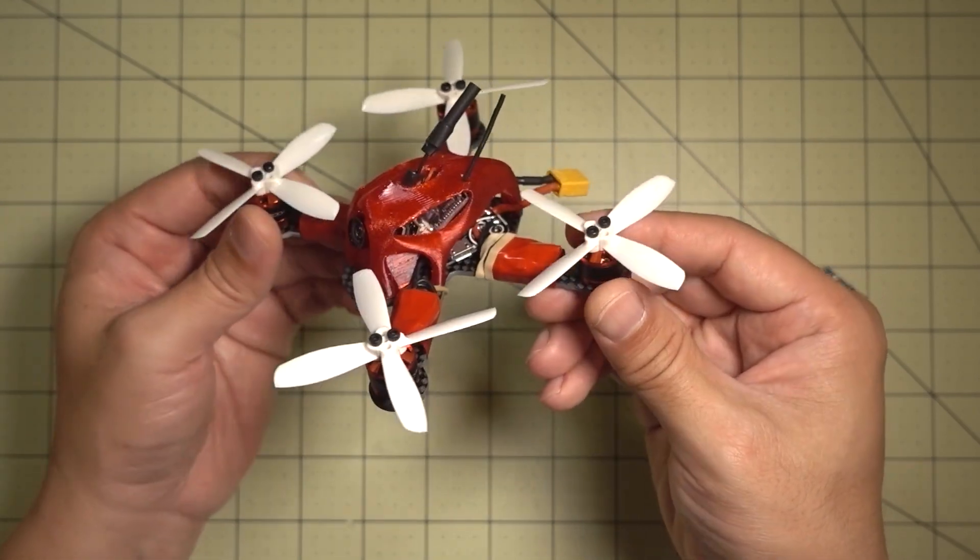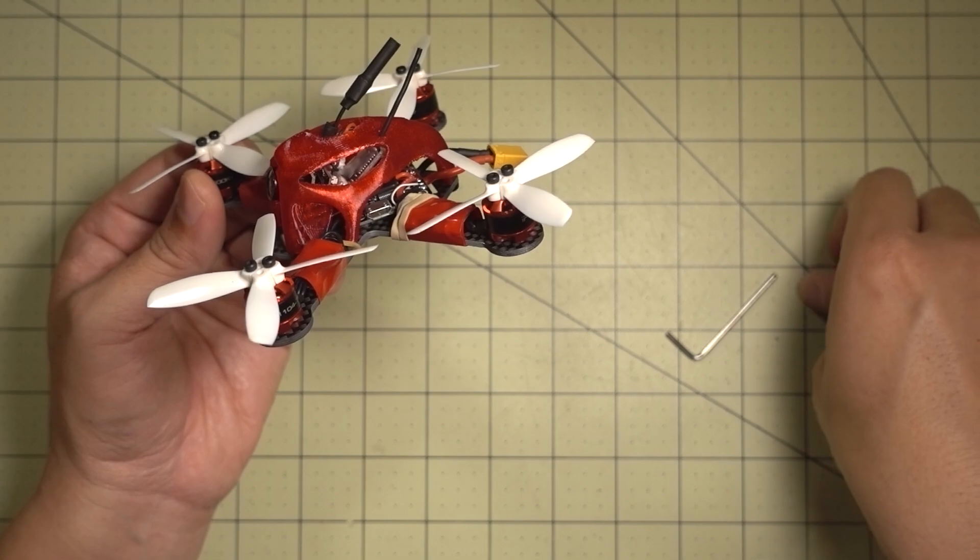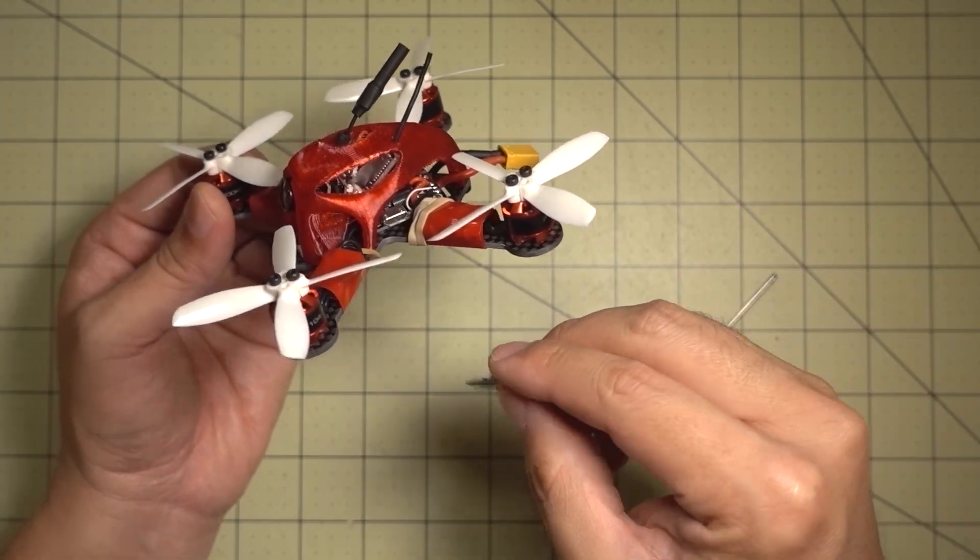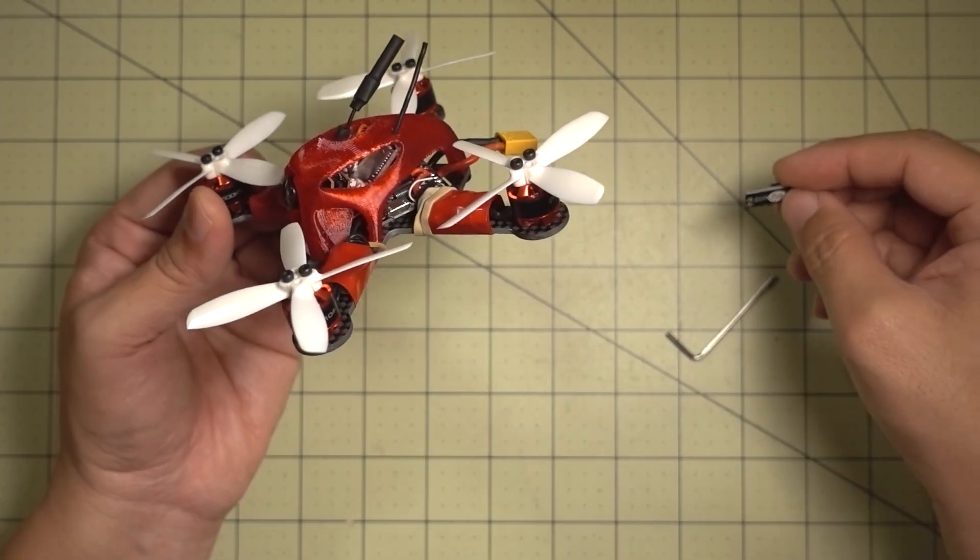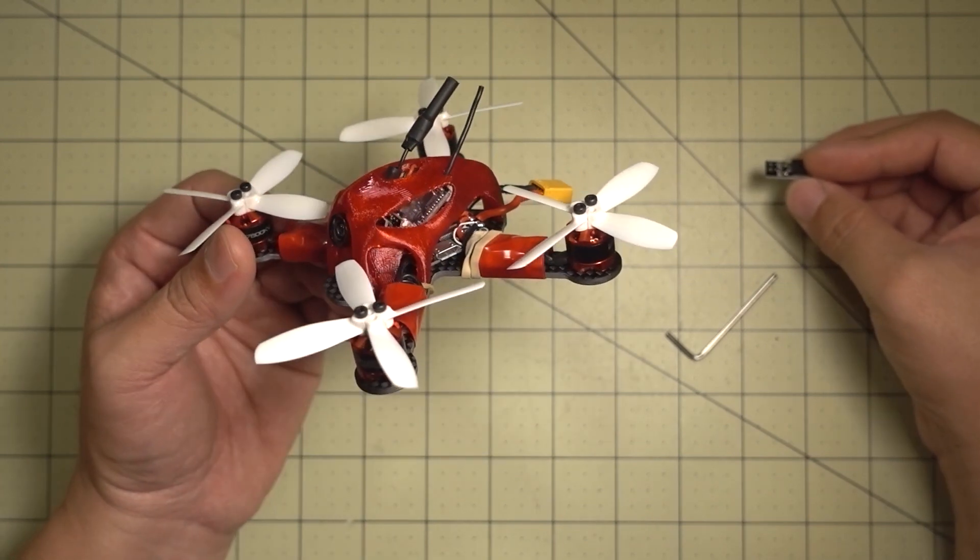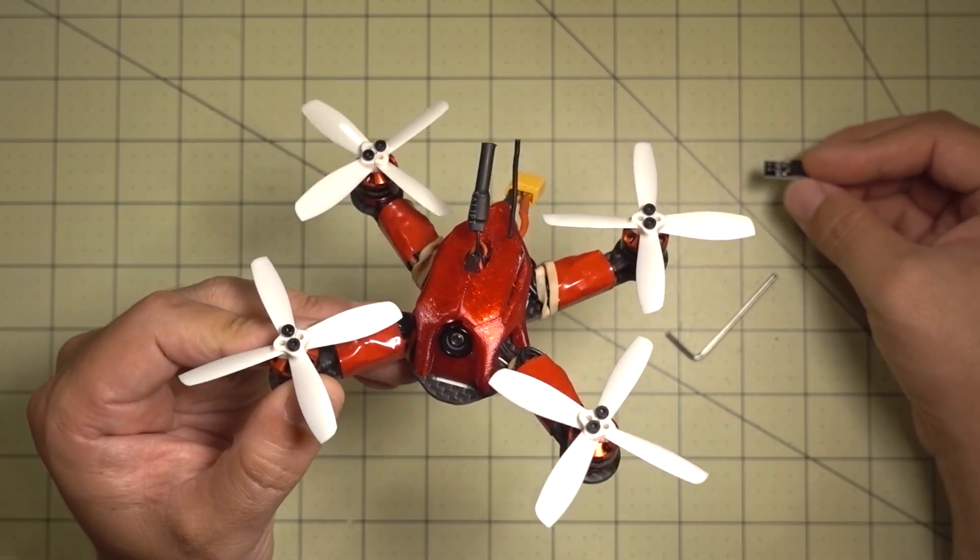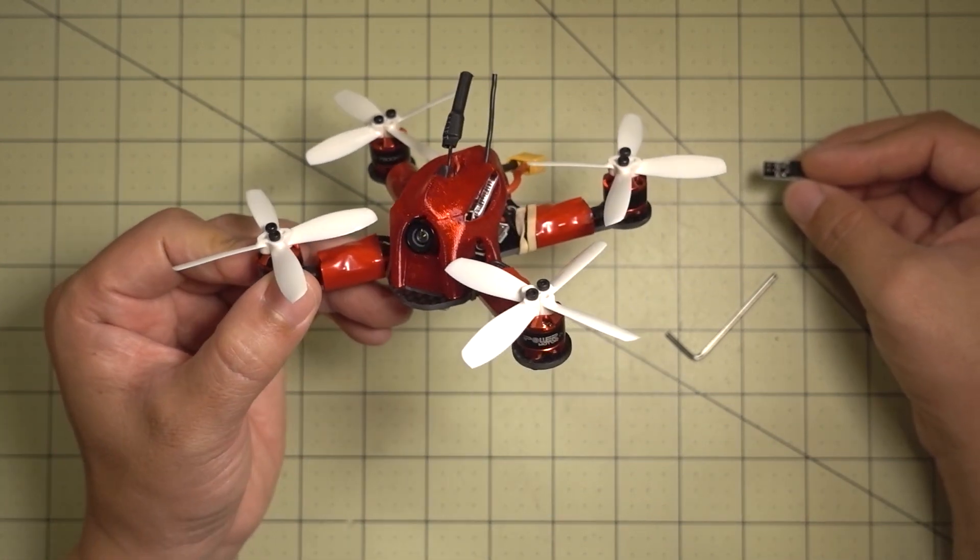These are the ones that I found and the solution for fixing the brownouts for me has been getting these little micro BECs for the weaker flight controllers and that seems to have fixed all the problems. I hope you found this video helpful, let me know if you guys have any questions and I will talk to you guys in the next one.